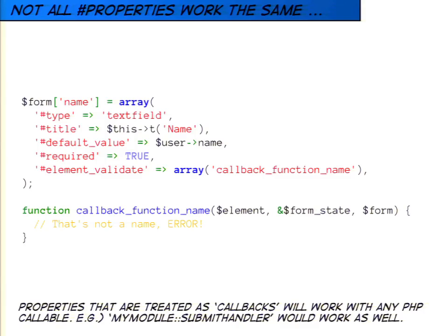On that documentation page, clicking on any property or element type will jump you down to the definition of that particular property with examples of it being used — I find that really helpful for copy-pasting and modifying. Some properties are special and not just simple strings of metadata — for example, the element validate property takes any PHP callable, like a function or namespace and method name, and will call that code when the particular property is being accessed by the Form API. Be aware of that as you're reading through the documentation.